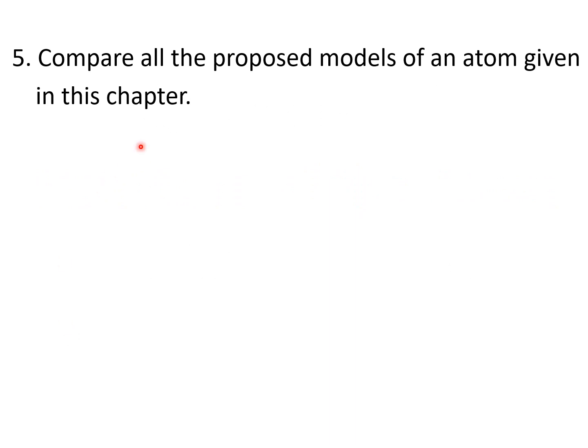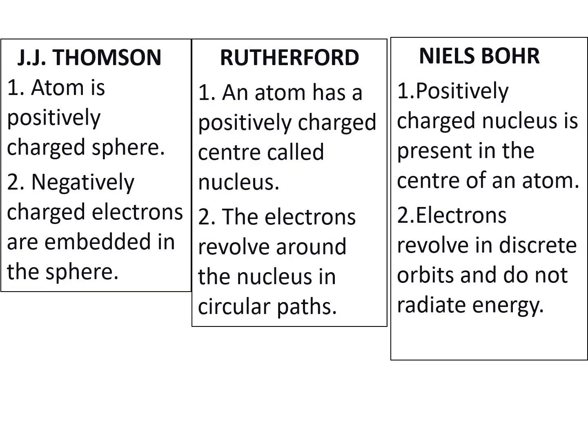Question 5 is: Compare all the proposed models of an atom given in this chapter. So there are three models which have been proposed in this chapter. The first one was by J.J. Thomson, second one was by Rutherford, and the third one was by Niels Bohr.